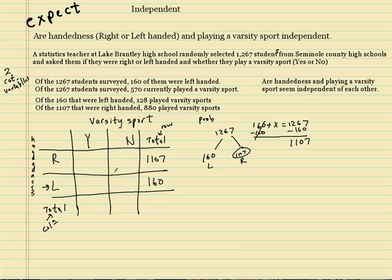Now that we have the row totals, we go after the inside cells. Out of the 160 that were left-handed, how many played varsity sports? That's 128. So 128 plus what gives me 160? That would be 32. Now for the 1,107 right-handers, how many played varsity sports? That's 880. And 1,107 minus 880 gives you 227 that didn't play.